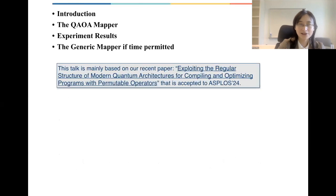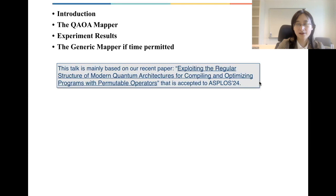Today I'm going to talk about our recent paper called "Exploiting the Regular Structure of Modern Quantum Architectures for Compiling and Optimizing Programs with Permutable Operators." I'll first give an introduction to the problem and our inspirations, then discuss building an optimal solver, show some experiment results, and if time permits, also talk about the generic macro my group has built.